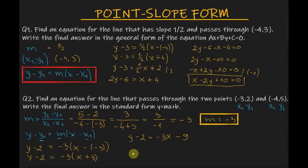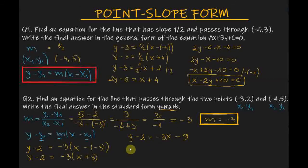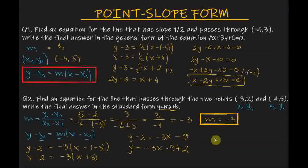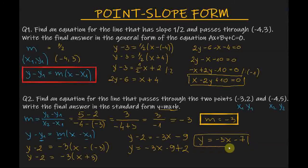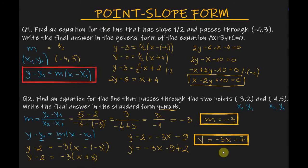The question asks us to write the equation in standard form. I will transfer minus 2 to the other side, leaving y on the left side. So y equals minus 3x minus 9 plus 2, which gives y equals minus 3x minus 7. This equation is now in slope-intercept form, derived from the point-slope form. The general formula of the slope-intercept form is y equals mx plus b.